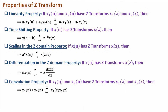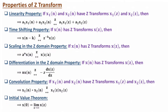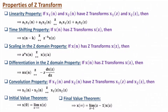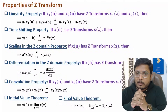The fifth property is convolution: if you have two signals x1(n) and x2(n) with Z-transforms X1(z) and X2(z), then convolution of these two signals corresponds to multiplication in the Z-domain. For the initial value theorem, the initial value equals limit as z tends to infinity of X(z). For the final value theorem, the final value x(infinity) equals limit as z tends to 1 of (z minus 1)*X(z).